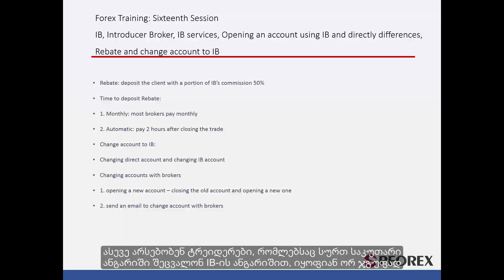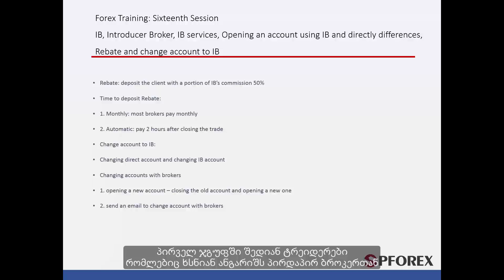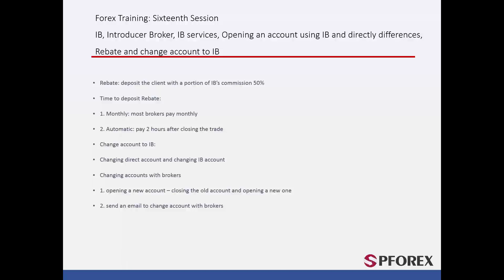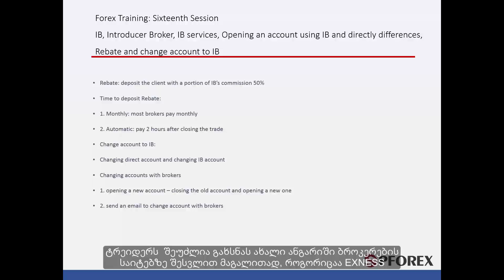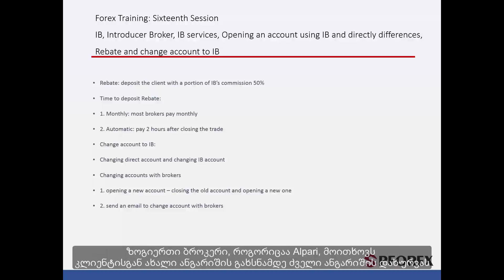There are also traders who would like to change their account to an IB account. These traders are split into two groups: those who opened their account directly with a broker, and those who have accounts with different IBs that can be transferred. A trader can open a new account by going to a broker's website, such as Exynos, to apply for a new account. Some brokers, such as Alperi, require a client to close their old account by sending an email to the broker before opening a new one.